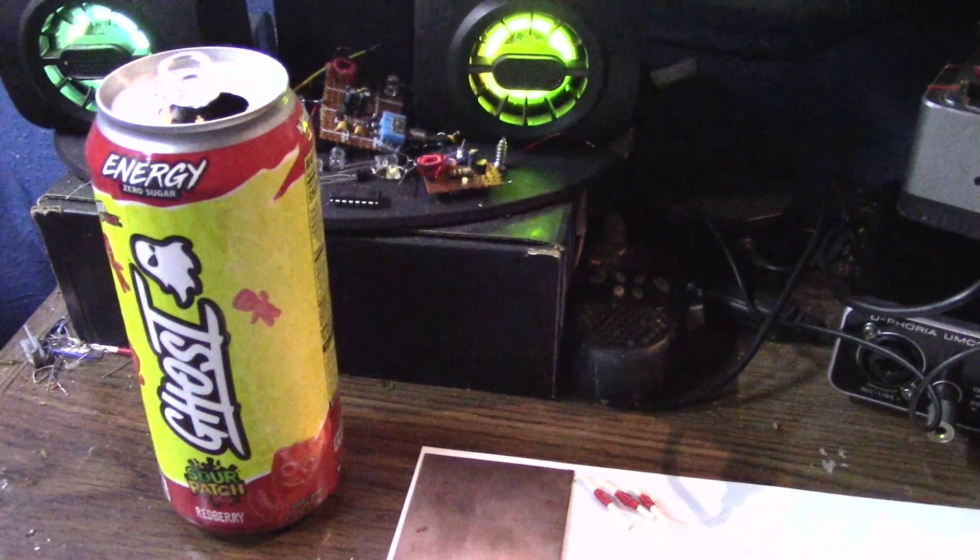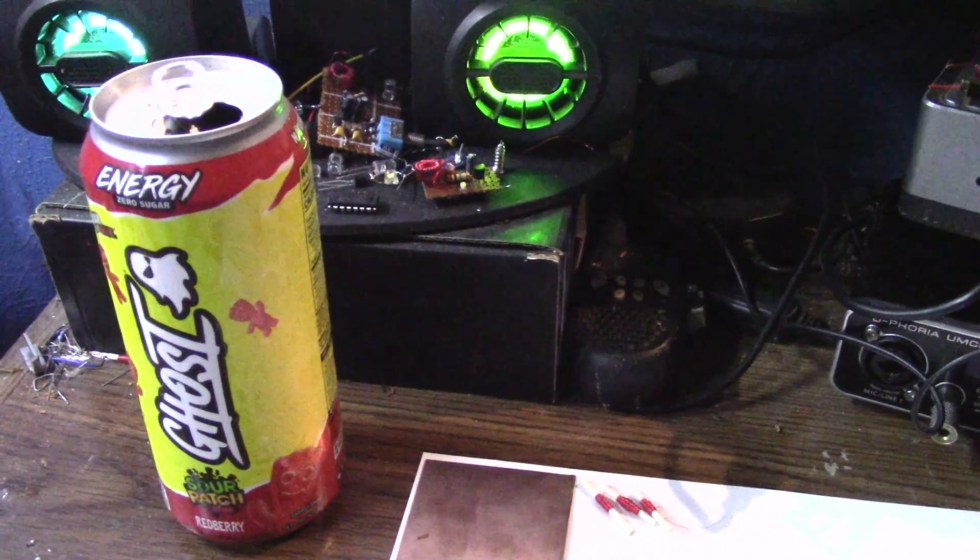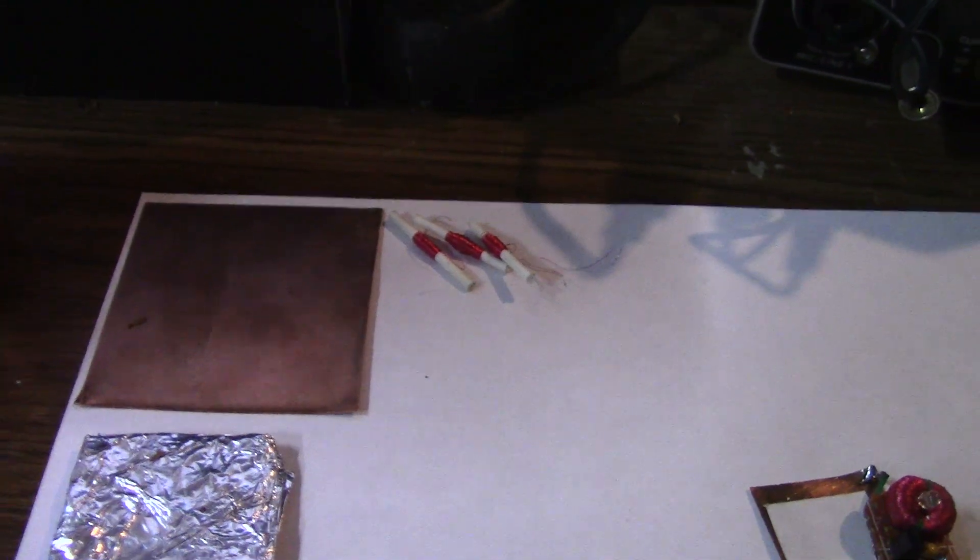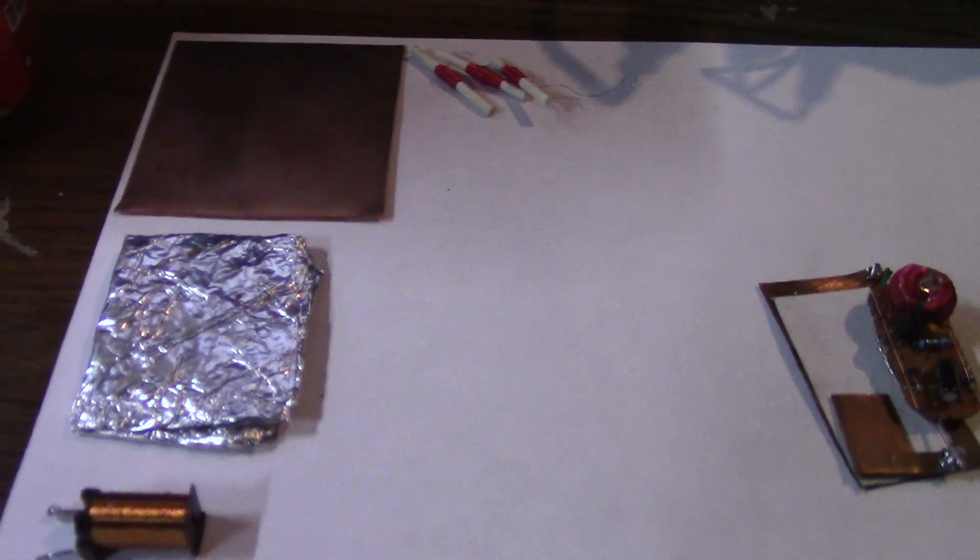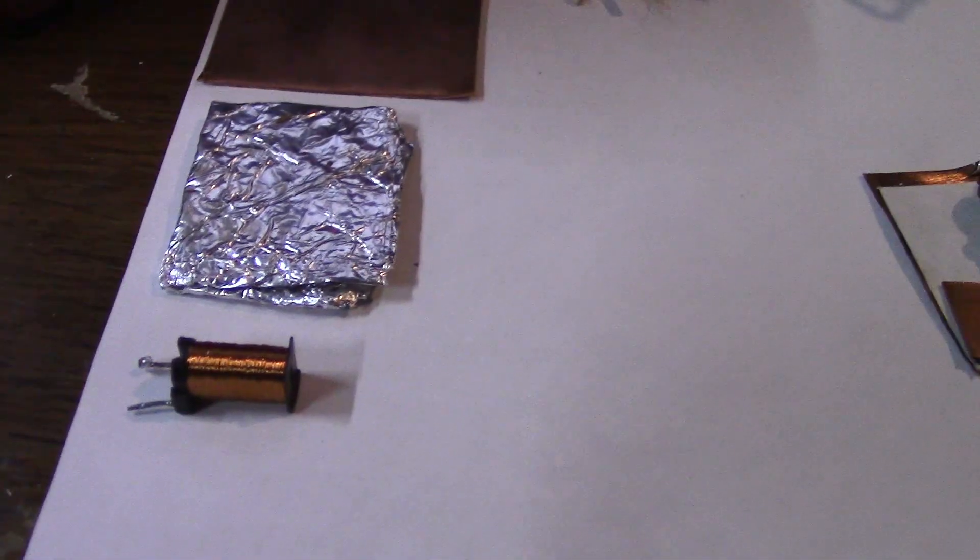Along the way I've used smaller and smaller grounding connections, such as the strength can, a piece of copper, aluminium foil, and the coil from a relay.